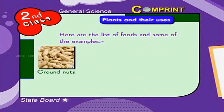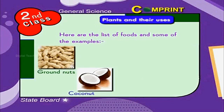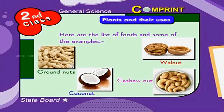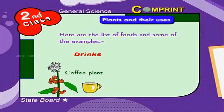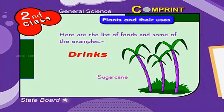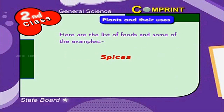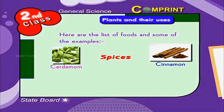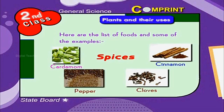Groundnuts, coconut, walnut and cashew nuts are used as nuts. Drinks like coffee come from seeds of the coffee plant, tea from leaves of a tea plant, and sugar from the stem of a sugar cane.